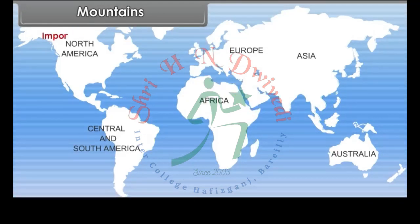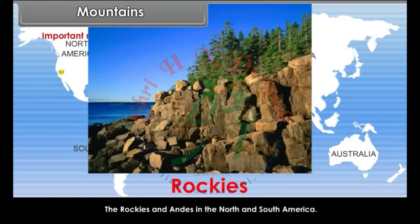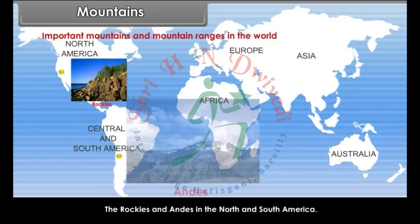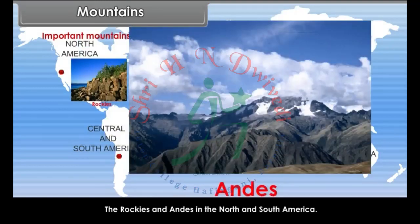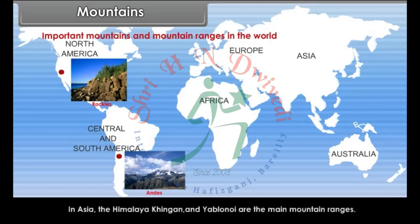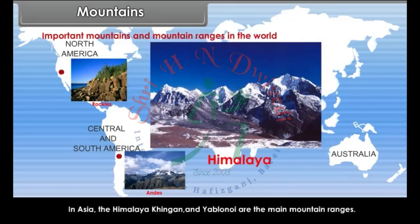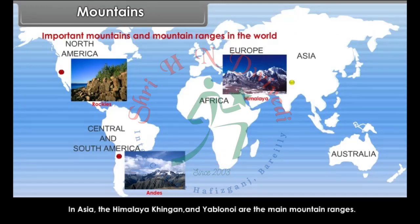Some of the important mountains and mountain ranges in the world: the Rockies and Andes in North and South America. In Asia, the Himalaya, Hinggan and Yablonoi are the main mountain ranges.